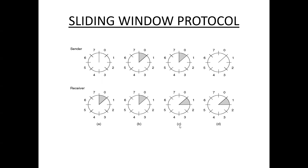In diagram C, the receiver receives frame 0 and waits for frame 1, so 1 is shaded in the receiving window. The rule is: if the receiver waits for a sequence number, that sequence number is shaded. If the sender sends a sequence number, that one is shaded.